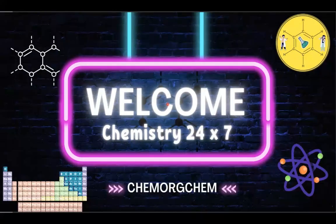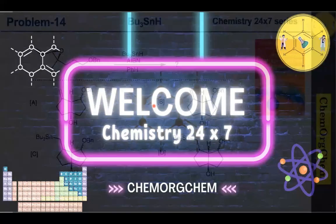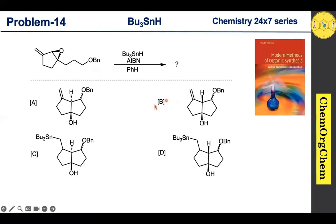Hello everyone, welcome back to Chemistry 24/7 series. In this session we will be tackling a problem adopted from Karuthar's textbook, presented as a multiple choice question. The problem involves the reaction of a given substrate with tributyltin hydride and AIBN, yielding a specific product. Four possible product structures are given. Let's work through the reaction mechanism and find the correct answer.